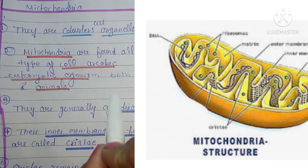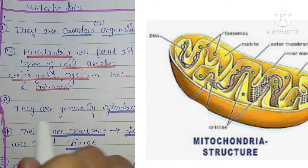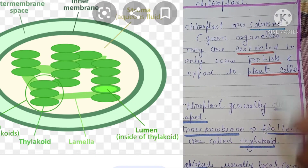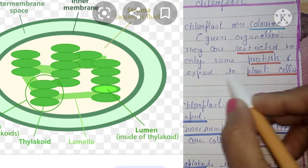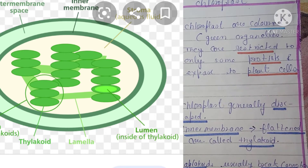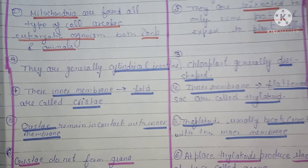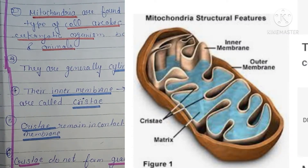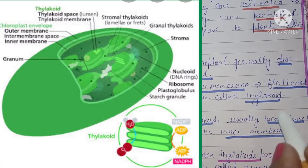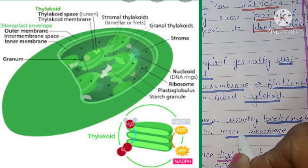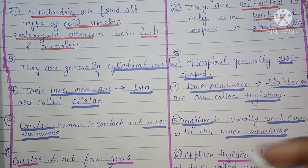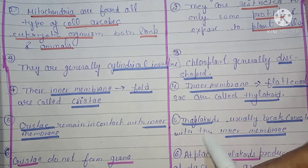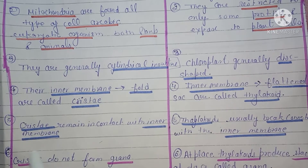Mitochondria ki inner membrane ki folding structure ko cristae kehte hain. Inner membrane of chloroplast ki baat kare toh flat sac-like structure dekhne ko milta hai, jise thylakoids kehte hain. Cristae inner membrane ke saath contact mein rehti hain, jabki thylakoids chloroplast mein inner membrane se connected nahi rehte — thylakoids are usually not connected with the inner membrane.